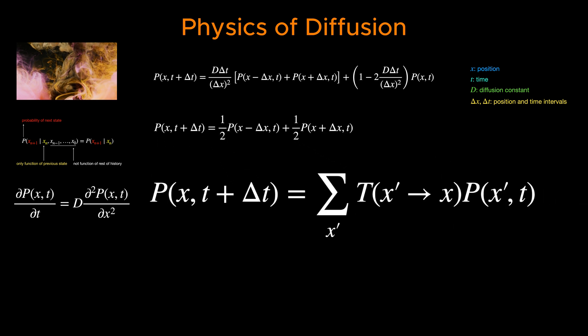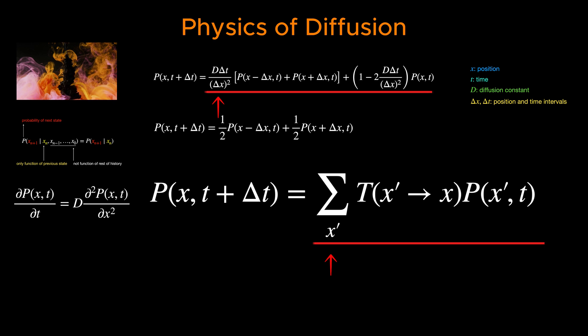In the context of diffusion, the states of a Markov chain represent the possible positions of a particle, and the transition probabilities define the likelihood of the particle moving from one position to another in a given time step.